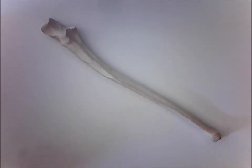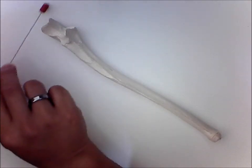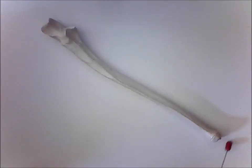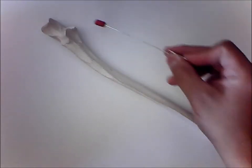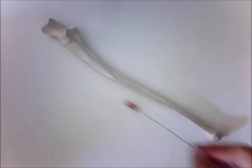You are looking at a right ulna from an anterior view. This end up here would be superior or the proximal end of the bone. This end would be the inferior or distal end of the bone. This is the medial side and this would be the lateral side.